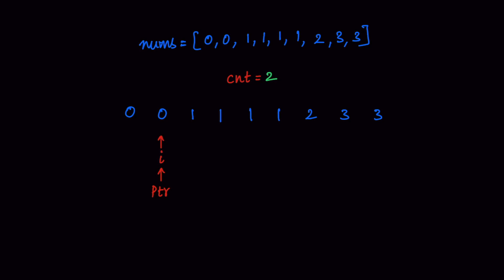After this, we increment our i pointer. After incrementing, we can clearly see that nums[PTR] is not equal to nums[i]. So in this case, we take this new unique element and increment our PTR value, also resetting our count value to 1. PTR is incremented and count is updated. We then perform the swapping of nums[i] and nums[PTR], but again nums[i] and nums[PTR] are pointing to the same location, so it makes no difference. We increment the i pointer again, and we can see nums[PTR] equals nums[i] and count equals 1.